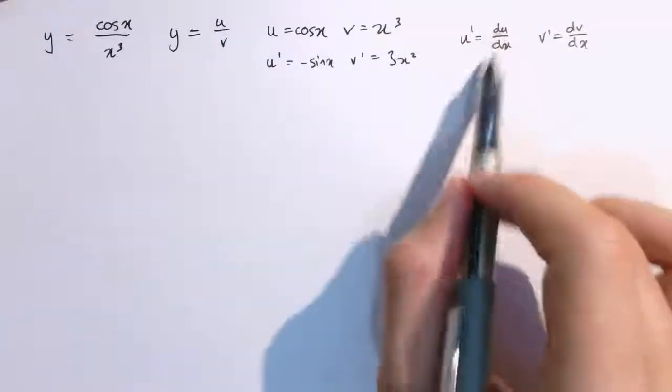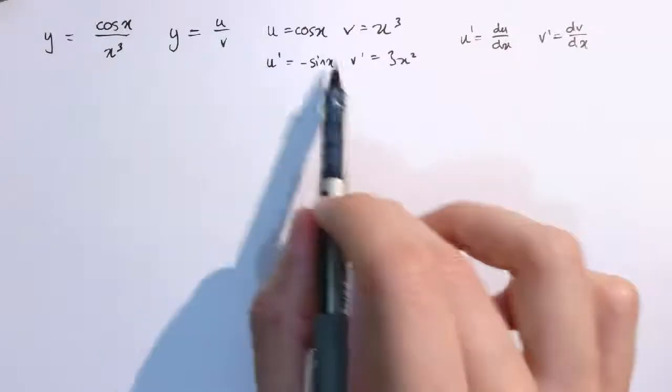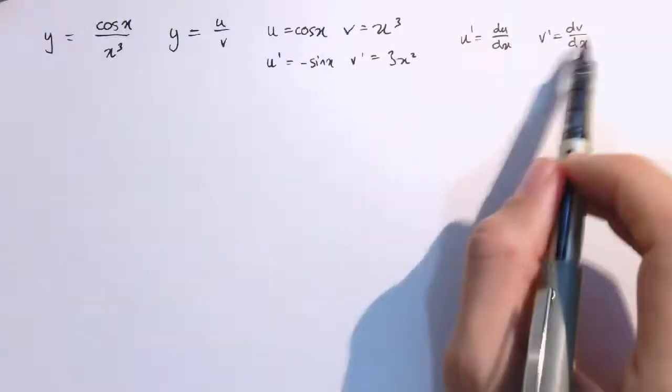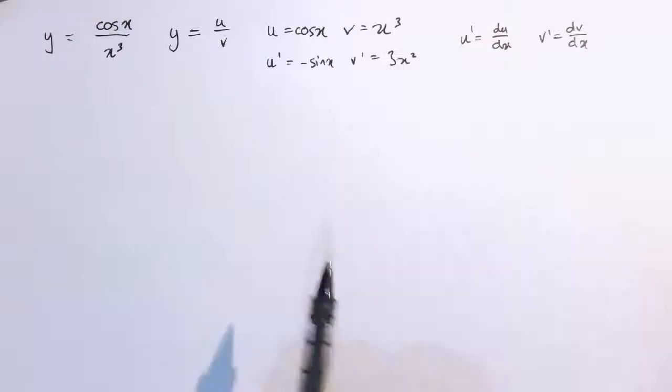u dashed is what I'm going to use for du by dx, here that would be minus sine x, and v dashed is the notation I'm going to use for dv by dx, which here would be 3x squared.